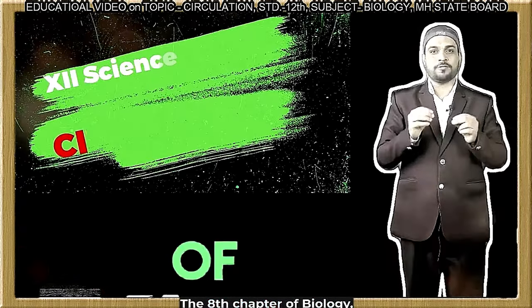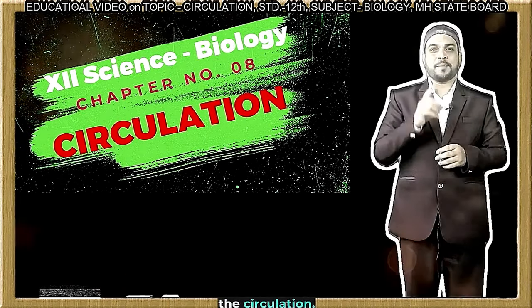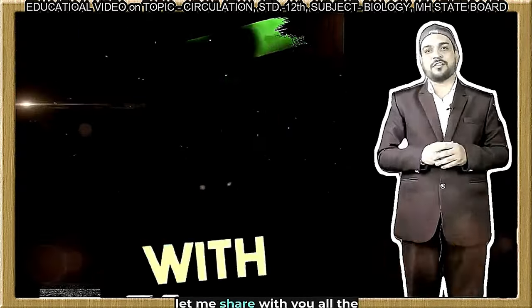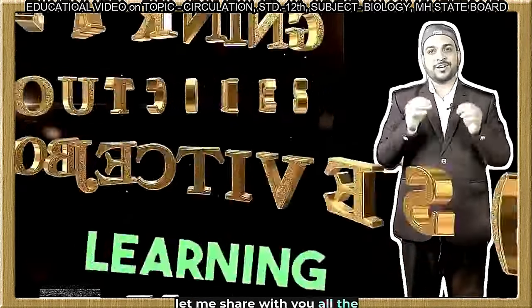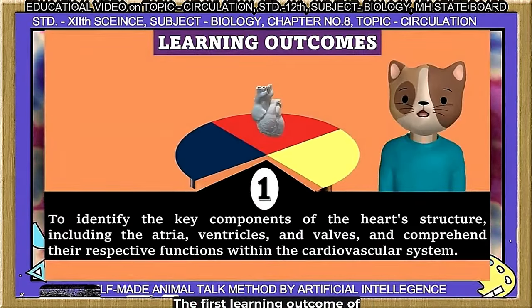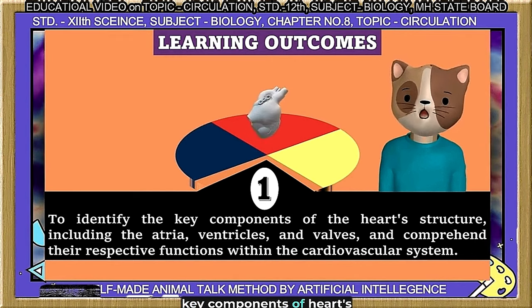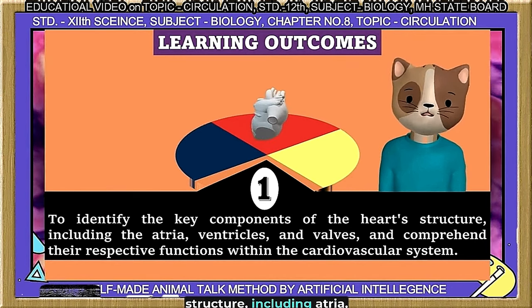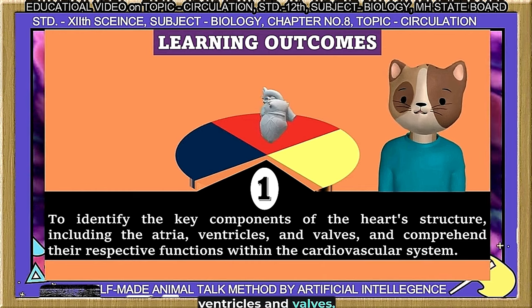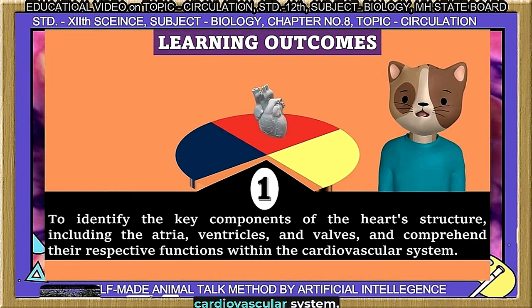The 8th chapter of biology subject of 12th standard — circulation. But before going to start with this topic, let me share with you all the learning outcomes and objectives of this chapter. The first learning outcome is to identify the key components of the heart's structure, including atria, ventricles, and valves, and comprehend their respective functions within the cardiovascular system.